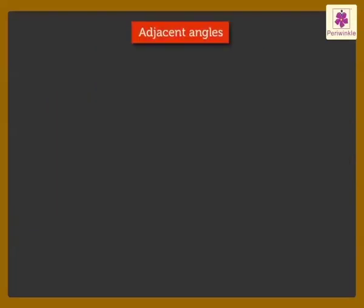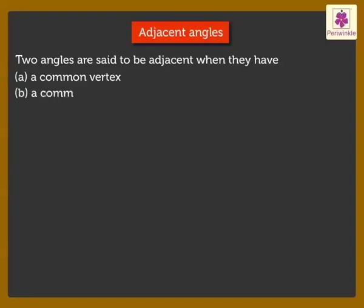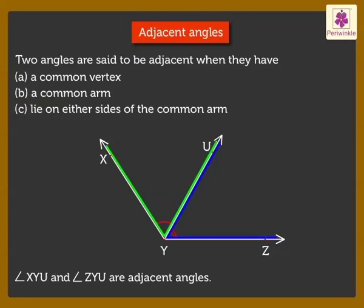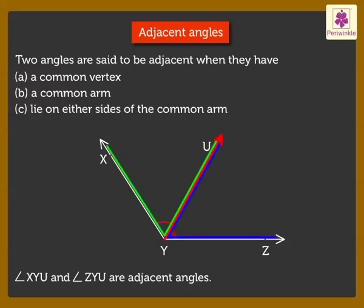Adjacent Angles: Two angles are said to be adjacent when they have a common vertex, a common arm, and lie on either sides of the common arm. Here, Angle XYU and Angle ZYU are adjacent angles as they have a common vertex Y and a common arm ray YU.